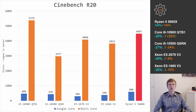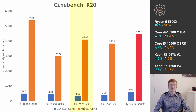Starting with Cinebench R20: the 10-core Core i9, which has nearly the same clock frequency as the Ryzen 5 5600X, loses 20% in single-core performance but wins 20% in multi-core. The Core i5-10500 QSRK loses 27% single-core and 34% multi-core. The Xeon E5-2678v3 loses nearly 50% in single-core but only 9% in multi-core. The overclocked Xeon E5-1660v3 at 4.2 GHz still can't match the Ryzen 5 5600X — it's 35% and 15% behind in single and multi-core respectively.